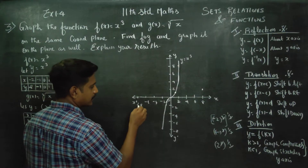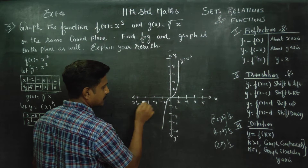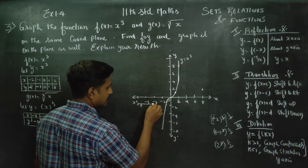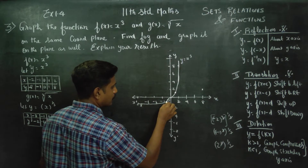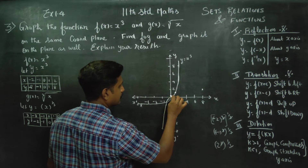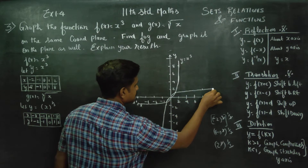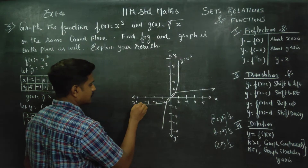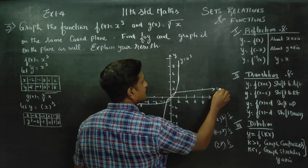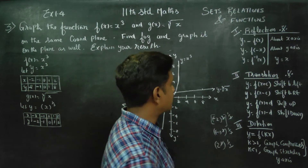In the graph, you will see it starting from minus 2, minus 8, entering through the origin at 0, 0, then going to 1, 1 and up to 2, 8. This is the second graph: y is equal to cube root of x. The graph is ready.